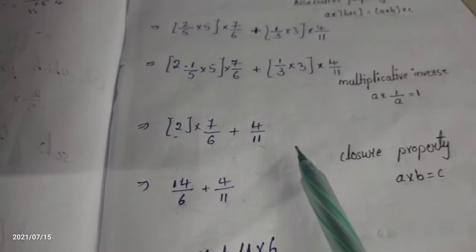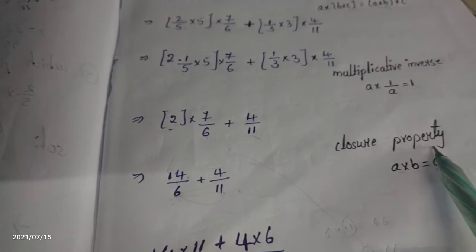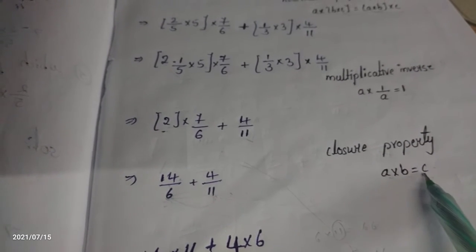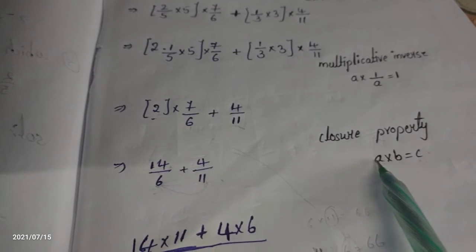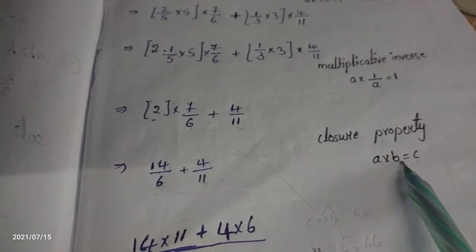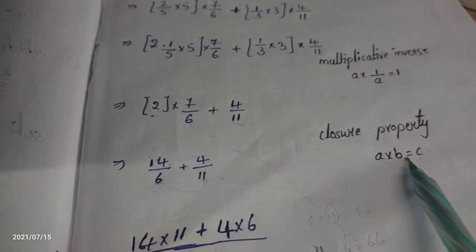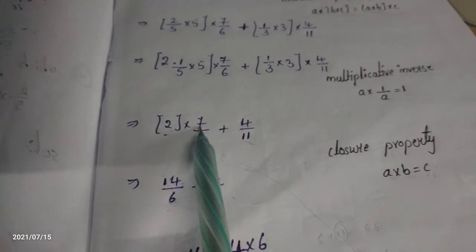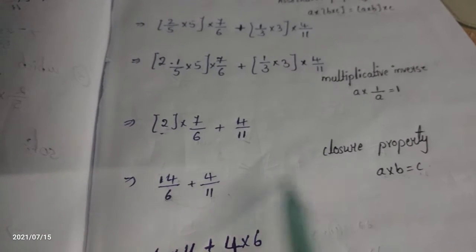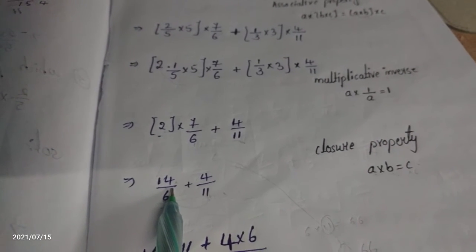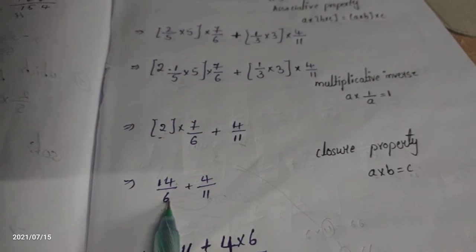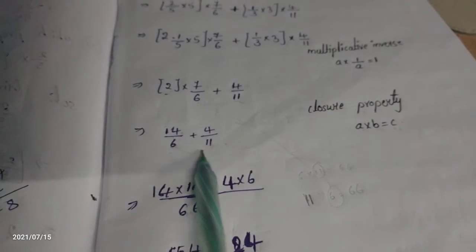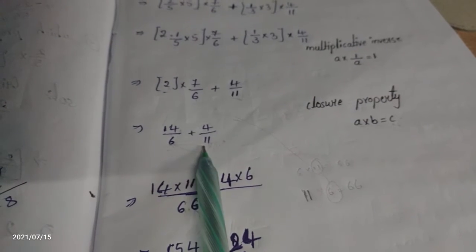In the next step, which property is applied? Closure property. What is closure property? A and B are rational numbers. When we apply A and B we get another rational number — one more rational number. Here I am taking 2 and 7: when we multiply, 2 sevens are 14, giving one more rational number. We get 14 by 6 plus 4 by 11. The LCM of 6 and 11 is 66.